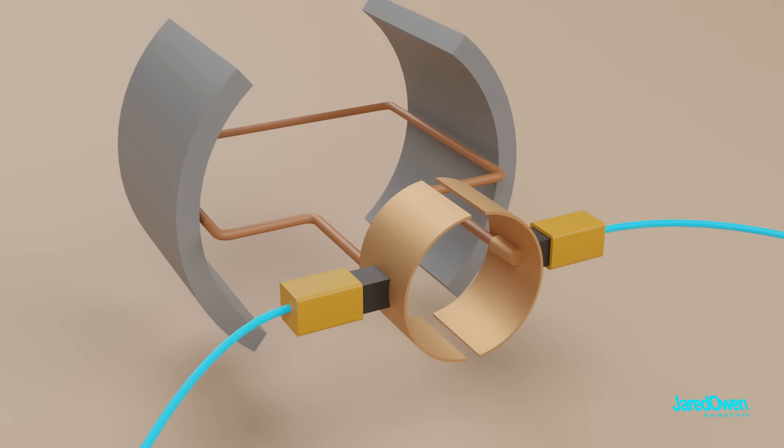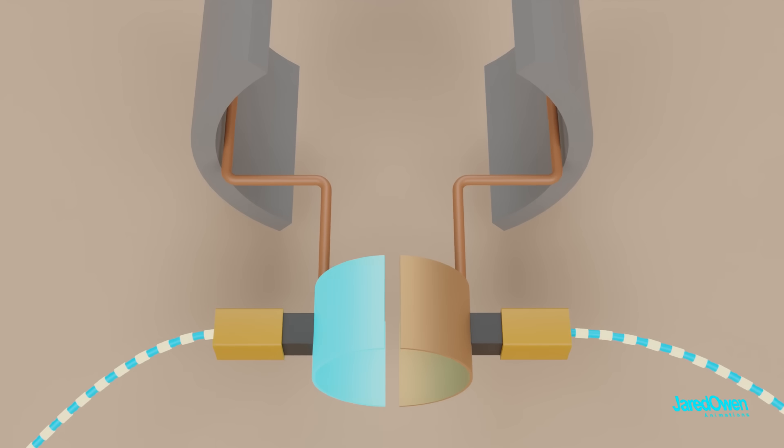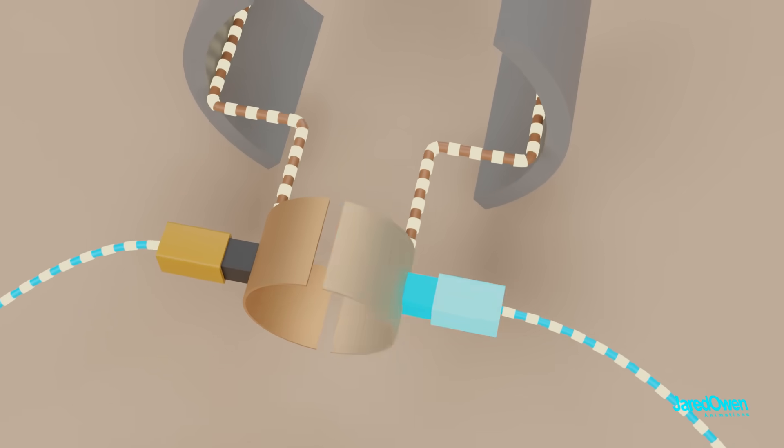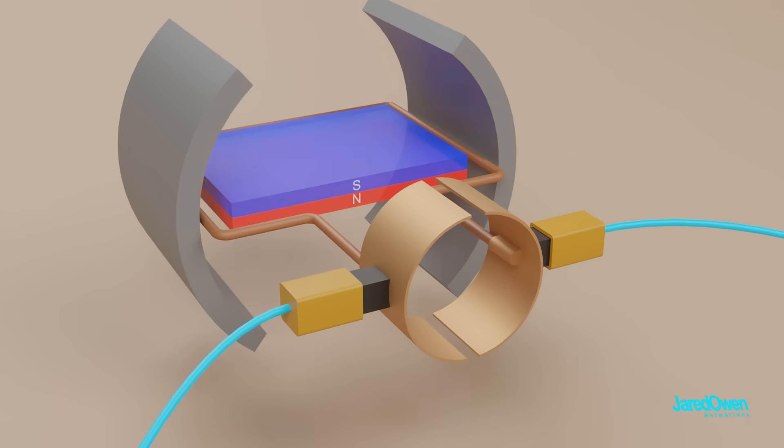The current flows from the wire, through the brush, the commutator ring, the armature loop, and back through the other side. Now we have our electromagnet and the armature spins.